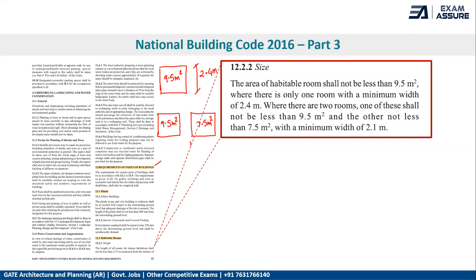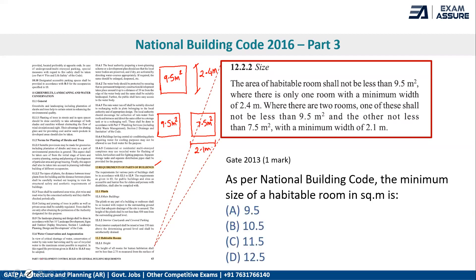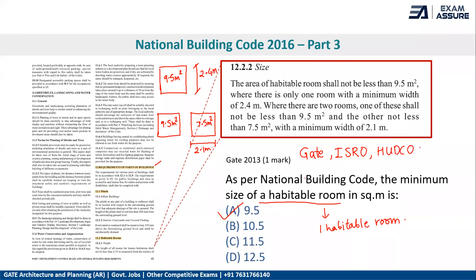The second room can be 7.5 square meters with a minimum width of 2.1 meters. Looking at a GATE 2013 one-mark question: as per the National Building Code, the minimum size of a habitable room in square meters is — here they are asking about one habitable room, so the answer is 9.5 square meters. This question has also been asked in ISRO exams and HUDCO exams.